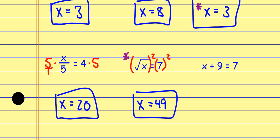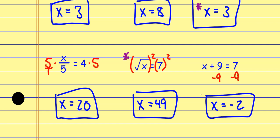And this one — plus nine: to undo adding nine, the opposite of adding nine is subtracting nine. Whatever I do to one side of the equation, I have to do to the other side. So I get X equals negative two. And you can always plug these back in and check them.